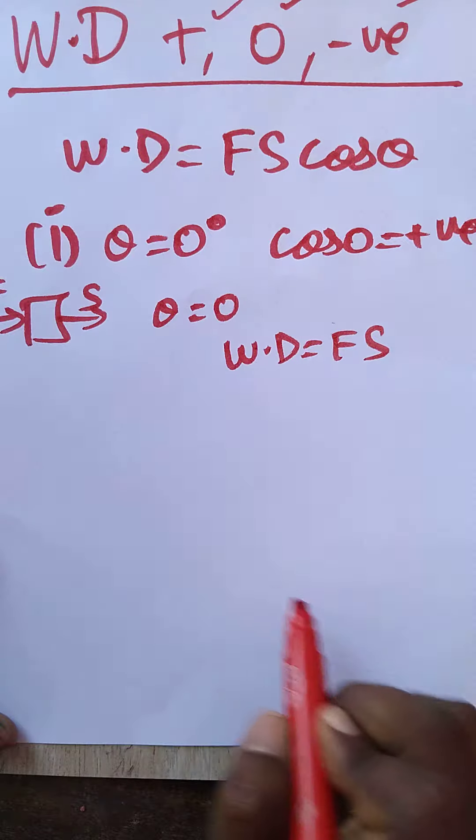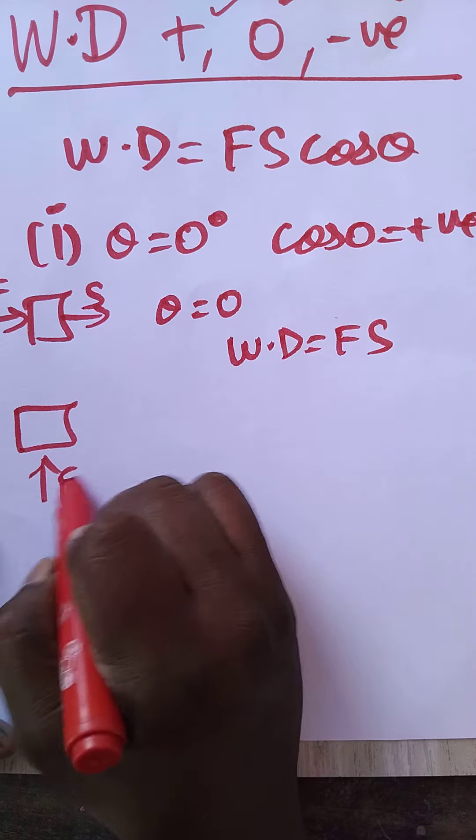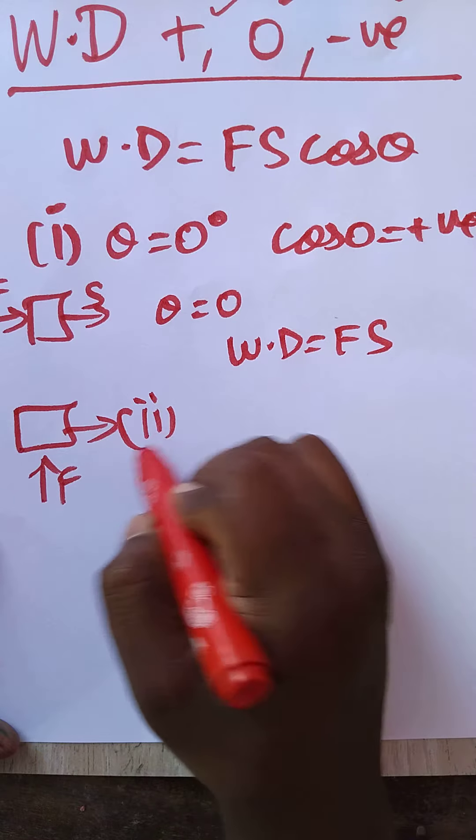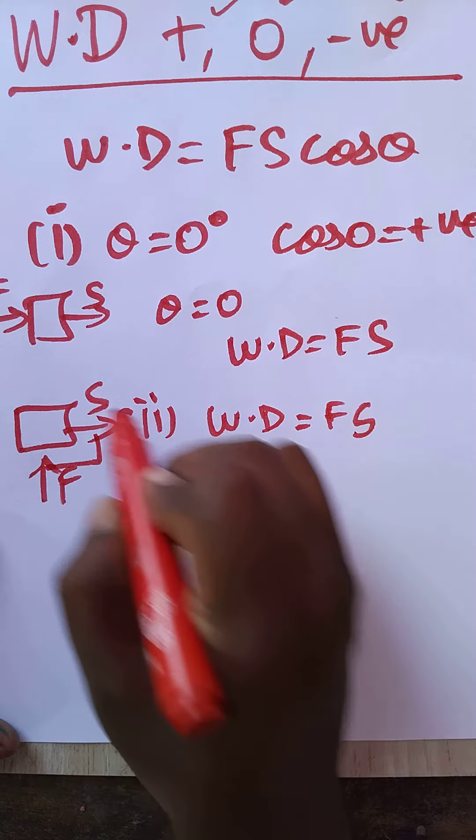Second condition: force is applied this side, displacement is this side. Now what is the work done? FS cos 90 degrees, because 90 degrees between force and displacement. Cos 90 degrees will be zero, so zero work done.